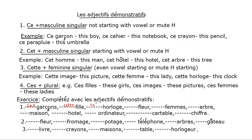'Horloge' is feminine singular starting with mute H, so the answer is 'cette'. 'Fleur' is feminine singular, so the answer is 'cette'. 'Femme' is plural, so the answer is 'ces'. 'Arbre' is masculine singular starting with a vowel, so the answer is 'cet'.